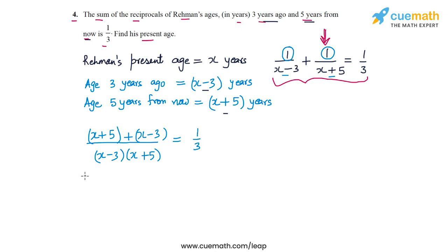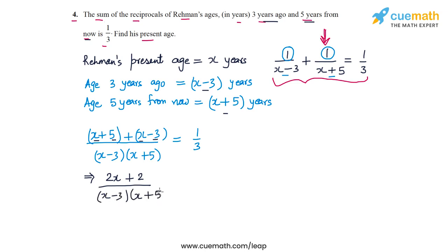Simplifying the numerator: x + 5 + x - 3 gives us 2x + 2. So we have (2x + 2) / [(x - 3)(x + 5)] = 1/3.